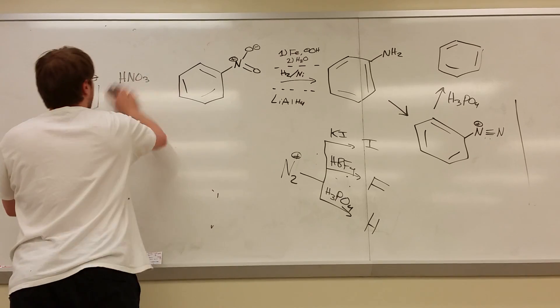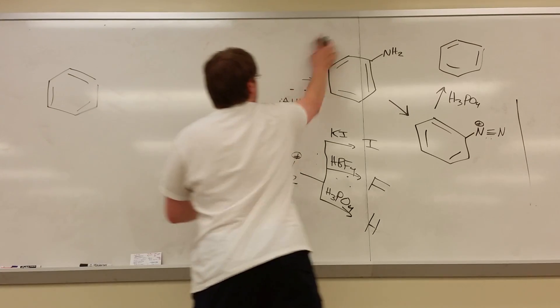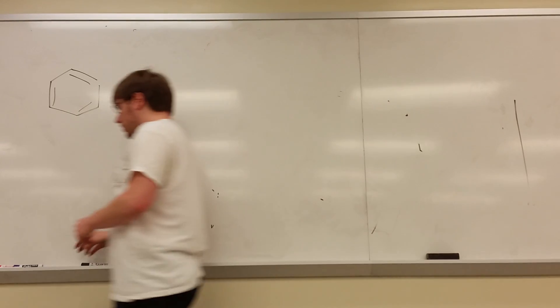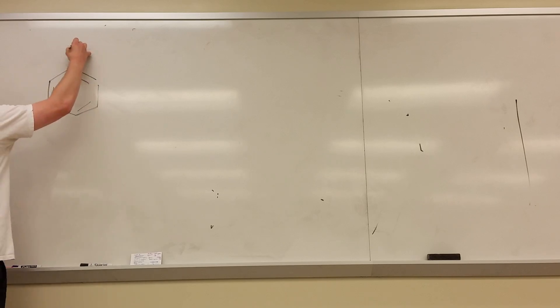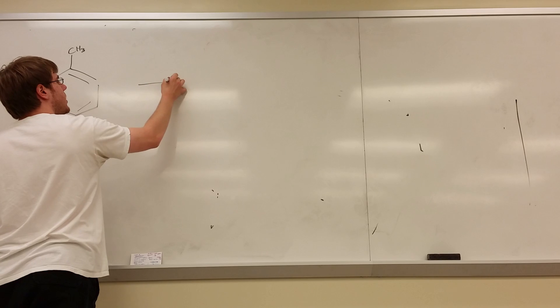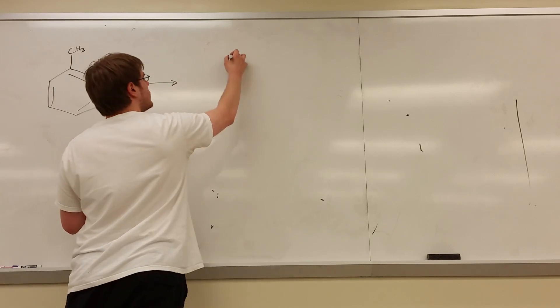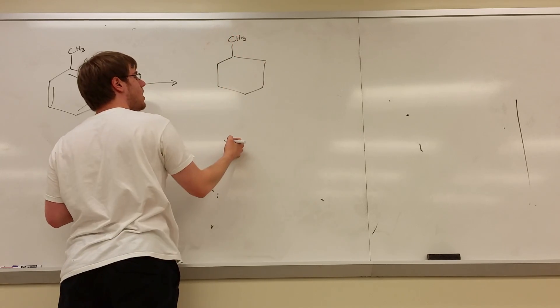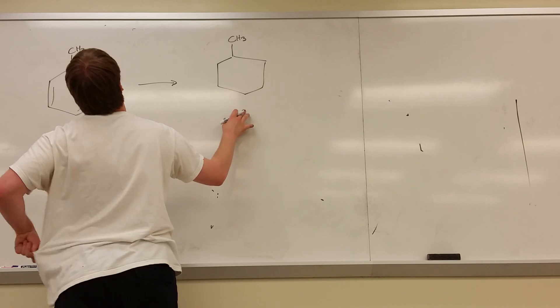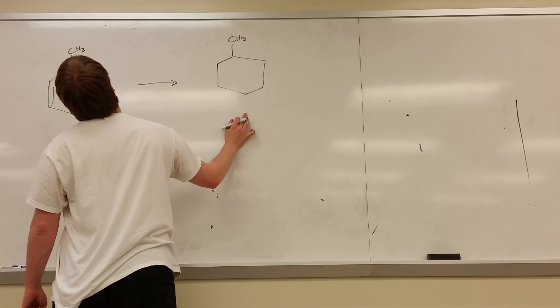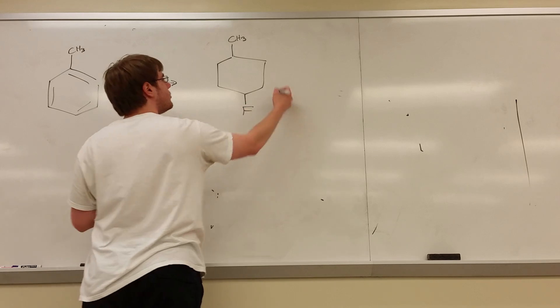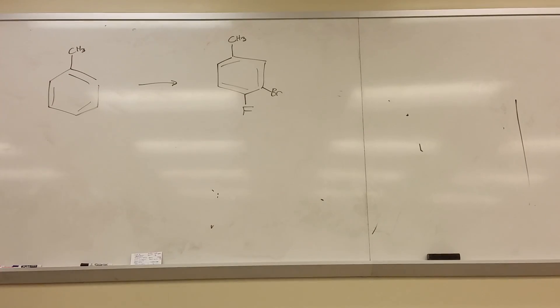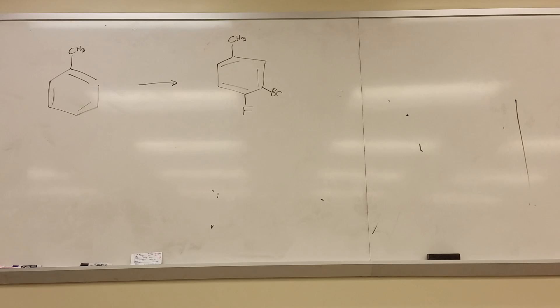So they told you to start with a benzene with a methyl on it and turn it into a benzene with a methyl on it. And what was it over here? It was fluorine, fluorine. Turn it into fluorine and add a bromine here. They wanted you to do this synthesis. So let's go through each individual piece and figure out what we need to do.